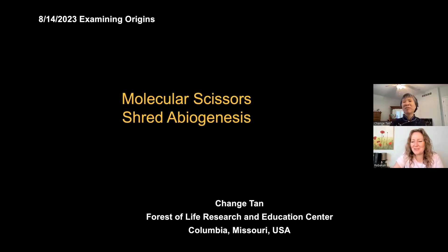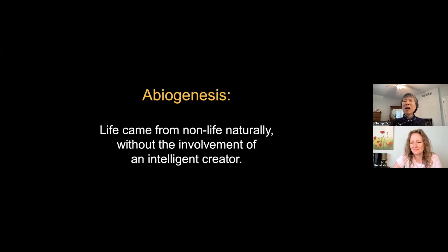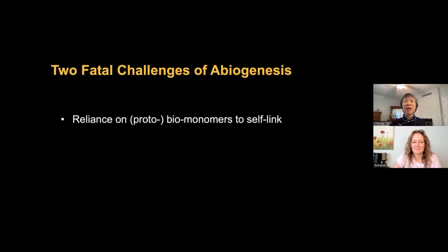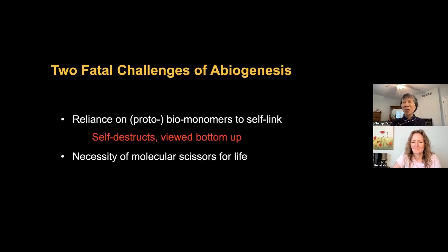So molecular scissors shred abiogenesis. It's about another problem of abiogenesis. Abiogenesis here I refer to life came from non-life naturally without the involvement of an intelligent creator. The two fatal challenges of abiogenesis: its reliance on biomonomers or proto-biomonomers to self-link, and the necessity of molecular scissors for life. The first one is self-destructive, and we are looking at the origin of life from bottom up. The second is like a murder, viewing the origin of life top down, from what we know about life.